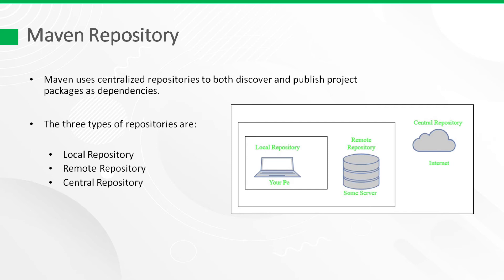Maven repository. Maven uses centralized repositories to both discover and publish project packages as dependencies. There are three types of repositories. Local repository: the local repository is a directory on the computer where Maven runs. It caches remote downloads and contains temporary build artifacts that you have not yet released.